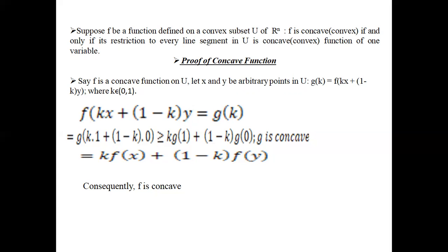The definition of a concave function is a statement about its behavior. The theorem states: let f be a concave function on u, and let x and y be two arbitrary points in the subset u of R. Define g(k) = f(kx + (1-k)y) where k lies between 0 and 1. For the proof, we consider f(kx + (1-k)y) = g(k).